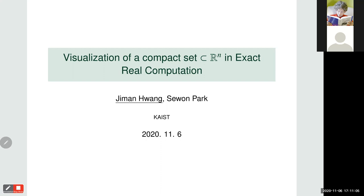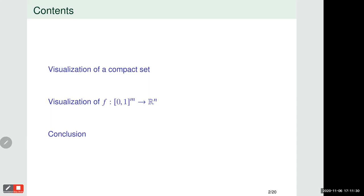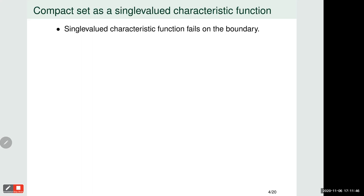Today I will talk about the visualization of a compact set in Euclidean space in the exact real computation sense. My name is Jiman Huang and this work is a joint work with Sewon Park. This talk consists of two sections: the first is visualization of a compact set represented by a characteristic function, and secondly, visualization of a path or homotopy.